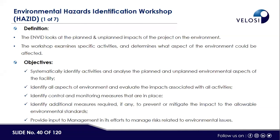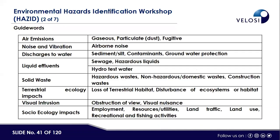ENVID also identifies all aspects of the environment and evaluates the associated impacts — again assessing them as low, medium, or high. We identify the control and monitoring measures in place, and if additional control measures are needed, we add them to prevent or mitigate impacts to the allowable environmental standard. It also provides input to management to manage risk related to environmental issues. Guide words used cover all components of the environment — for example, air emissions, including gases, particulate matter, and fugitive emissions.